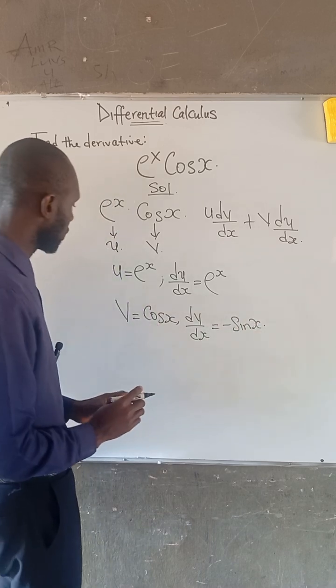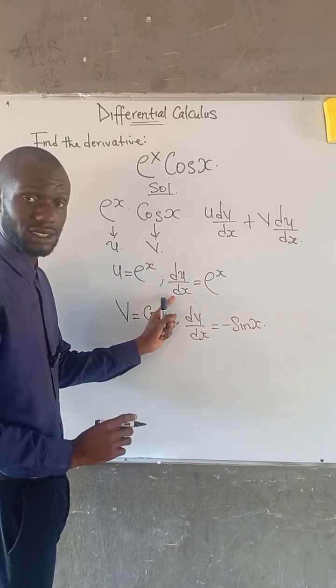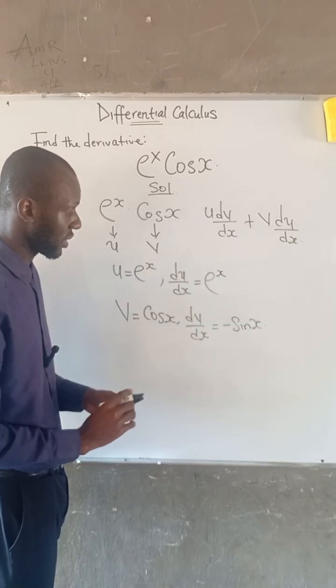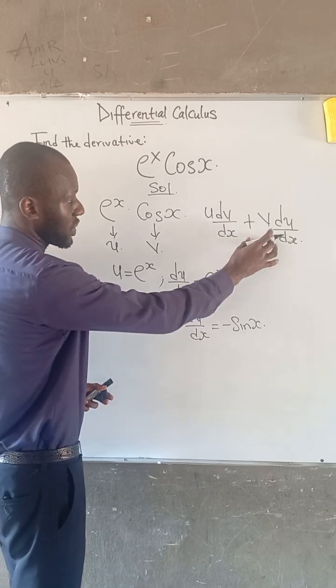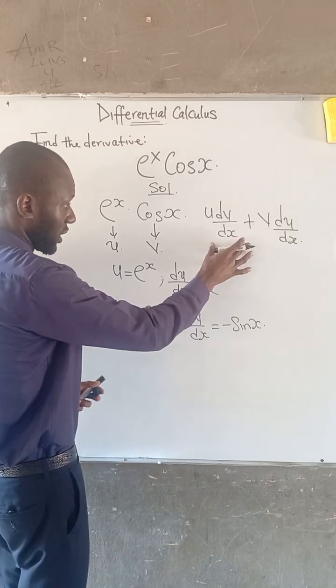So at this point, we have obtained the value of u, that of v, even du over dx and dv over dx. Now we will substitute these values into the formula or the expression given to us.